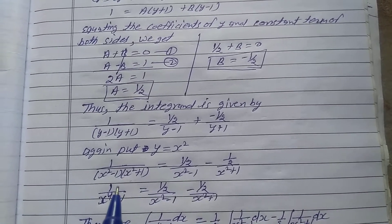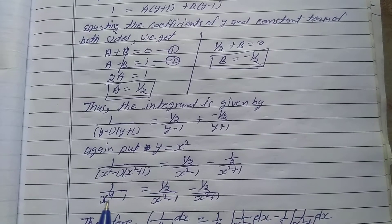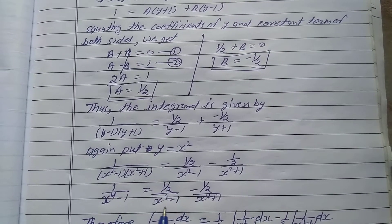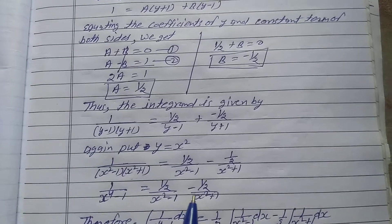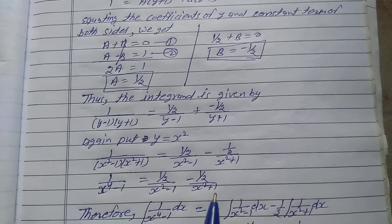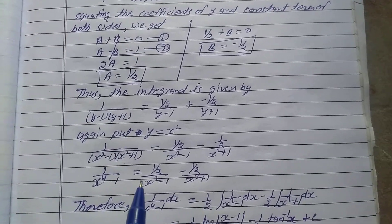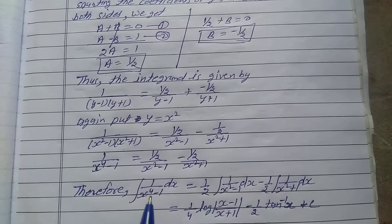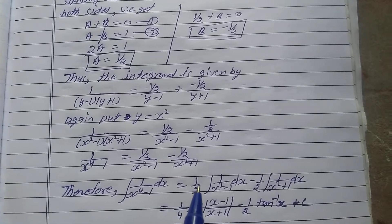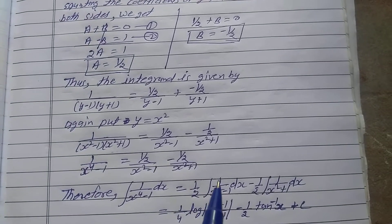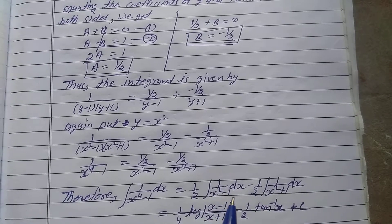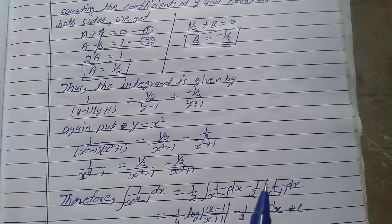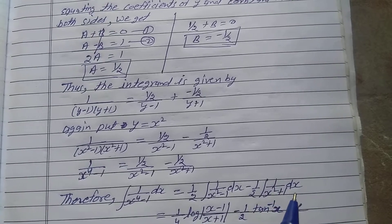So 1 upon x power 4 minus 1 equals 1 by 2 upon x square minus 1 minus 1 by 2 upon x square plus 1. Applying integration on both sides: the integration of 1 upon x power 4 minus 1 dx equals 1 by 2 integration of 1 upon x square minus 1 dx minus 1 by 2 integration of 1 upon x square plus 1 dx.